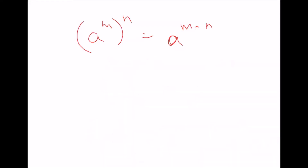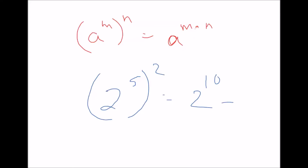One more example: 2 to the 5th power squared means 2 to the 10th power, which is equal to 1024.